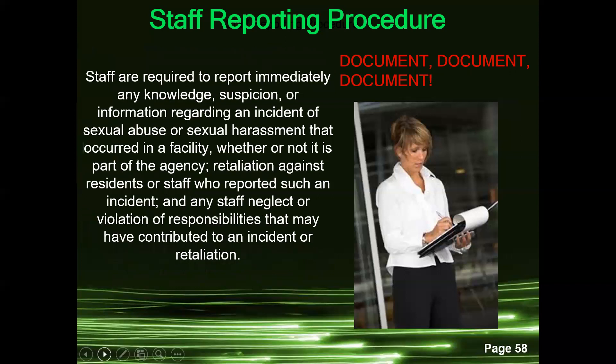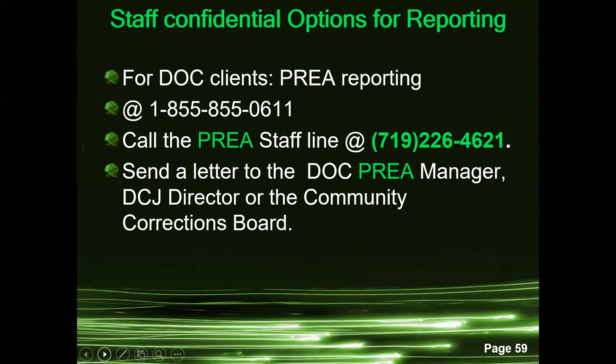Staff confidential reporting options include an 800 number DOC tip line for DOC clients, the PREA staff line at 719-226-4621, or sending a letter to the DOC PREA manager, DCJ director, or the community corrections board. You can also talk to your director, your immediate supervisor, or me — the PREA coordinator.